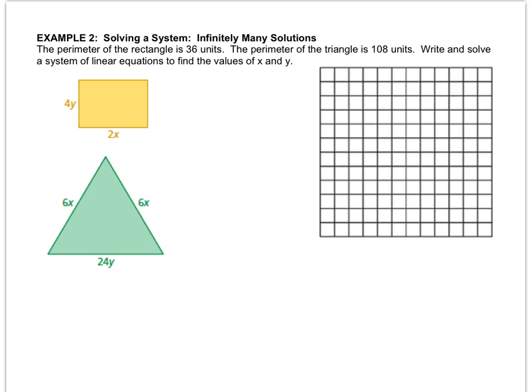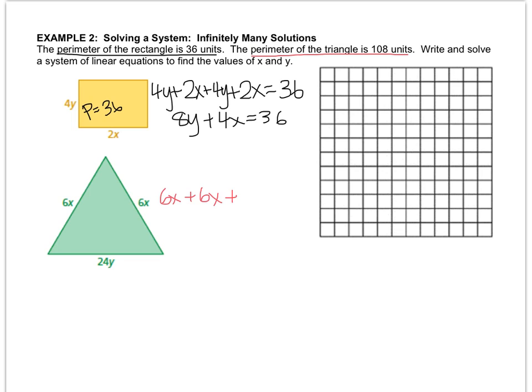All right, this one's a word problem, so we have to write our own equations. And you notice that I haven't given you the setup, so hopefully you can use the story and write the equations yourself. It tells us that the perimeter of the rectangle is 36 units. Well, perimeter is when you add up all the sides, so I'll write the equation 4y plus 2x plus another 4y plus another 2x equals 36. Remember, rectangles have four sides. And I'll just simplify that and say 8y plus 4x equals 36. Let's go to the triangle. It says the perimeter of the triangle is 108 units. So that's going to be 6x plus 6x plus 24y equals 108. And simplifying that, you get 12x plus 24y equals 108.